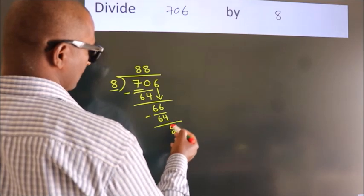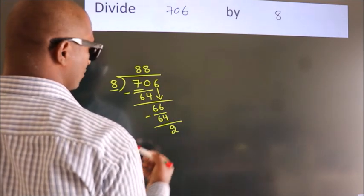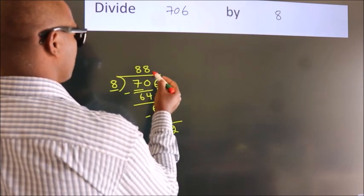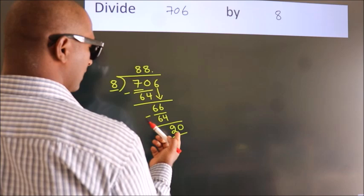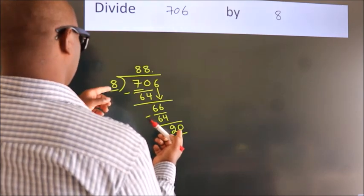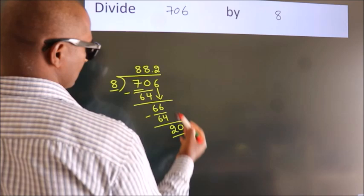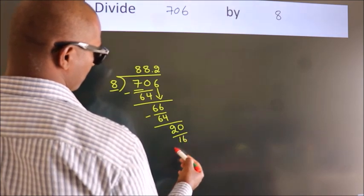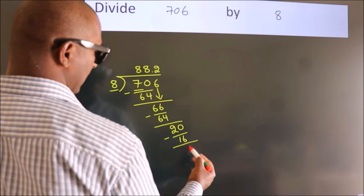After this, no more numbers to bring it down. So, what we do is, we put dot take 0. So, 20. A number close to 20 in 8 table is 8 2s 16. Now, we subtract. We get 4.